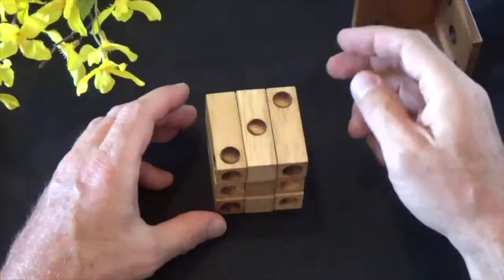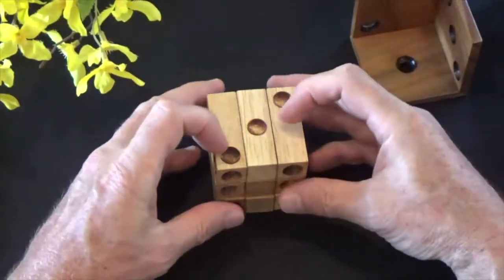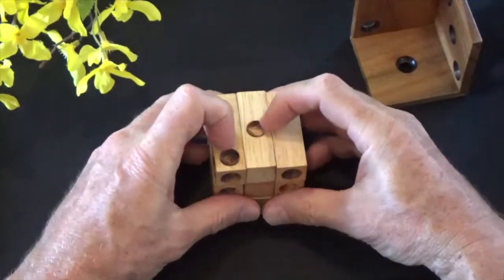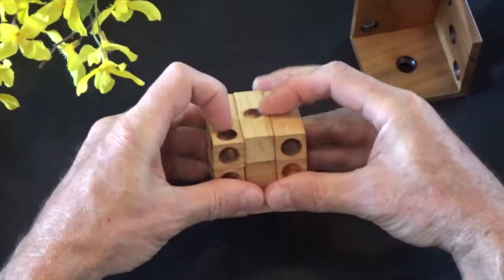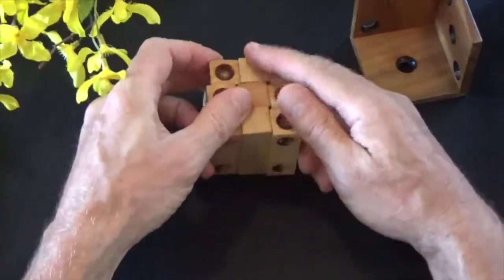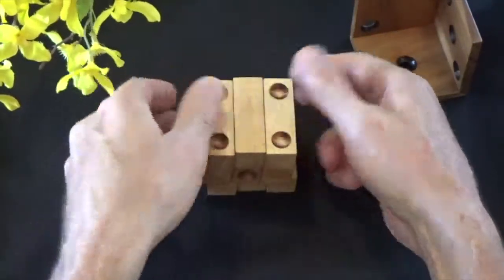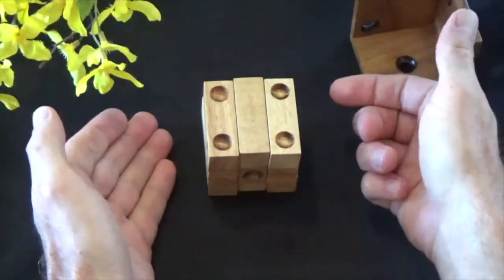You see we have a three on this side. So if I turn this over there'll be a four on the bottom. So I'm going to turn this over and show that to you. So there's the four. Four plus three equals seven.